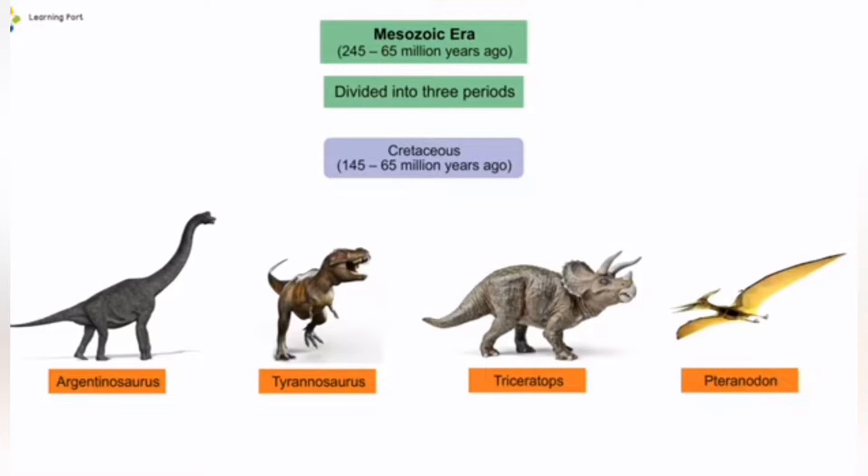The Cretaceous period lasted from 145 to 65 million years ago. The majority of dinosaur populations rose during this period. These include Argentinosaurus, Hypsilophodon, Triceratops, and Pteranodon.